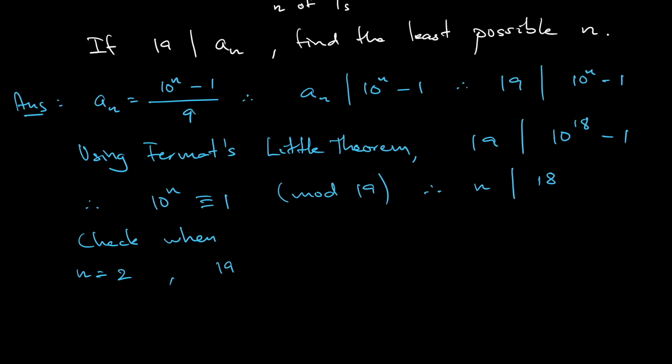Does 19 divide 99? No, 19 does not divide 99, so n cannot be 2. Can n be 3? Because 3 is the next factor of 18.